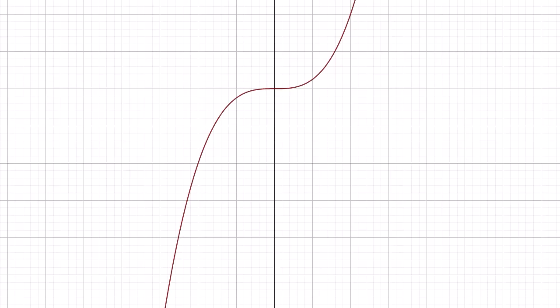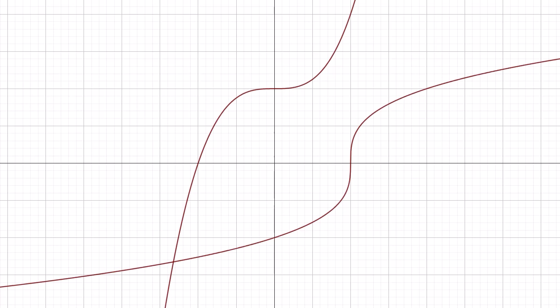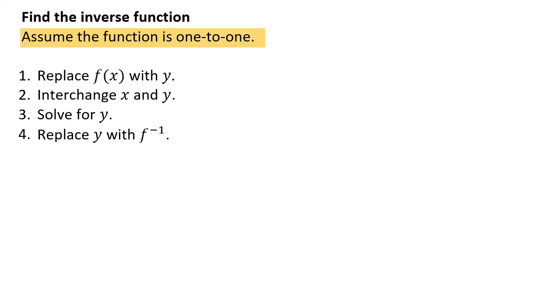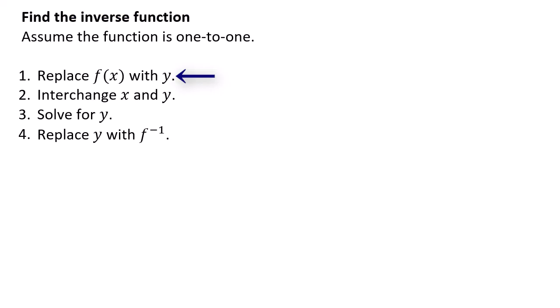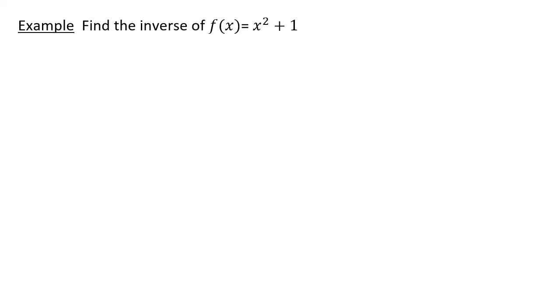Here's the graph of f(x) = x³ + 1 and its inverse ∛(x − 1), which are reflections about the line y = x. If you're given a one-to-one function, you can find the inverse function as follows. Step 1: replace f(x) with y. Step 2: interchange x and y. Step 3: solve for y. Step 4: replace y with the inverse notation f⁻¹.